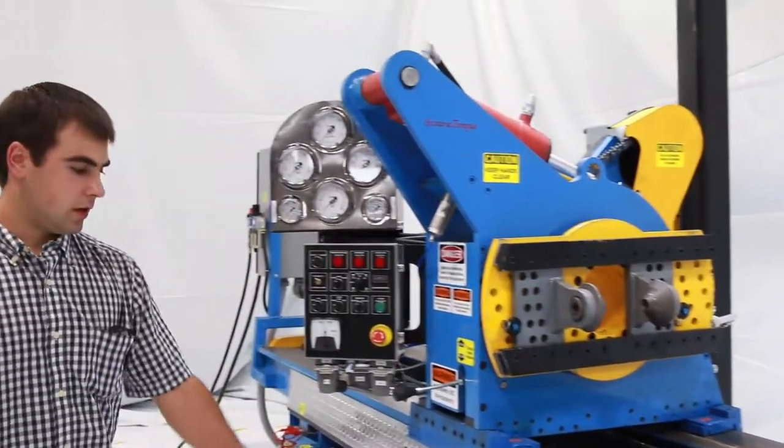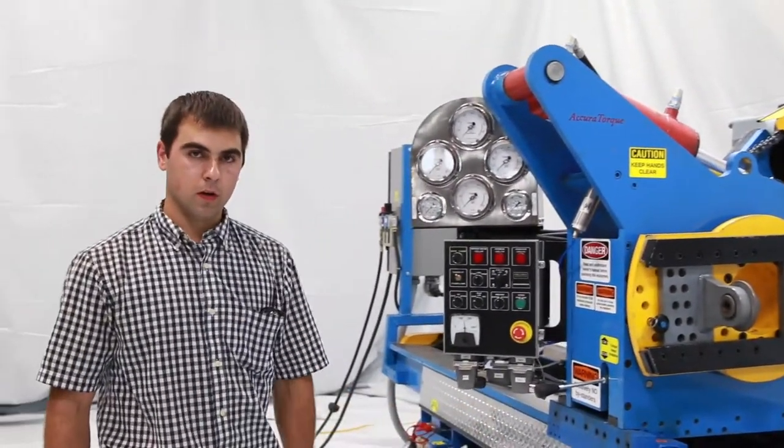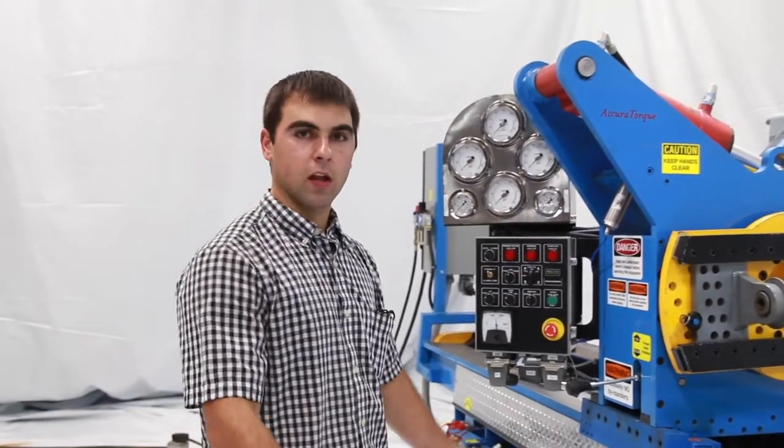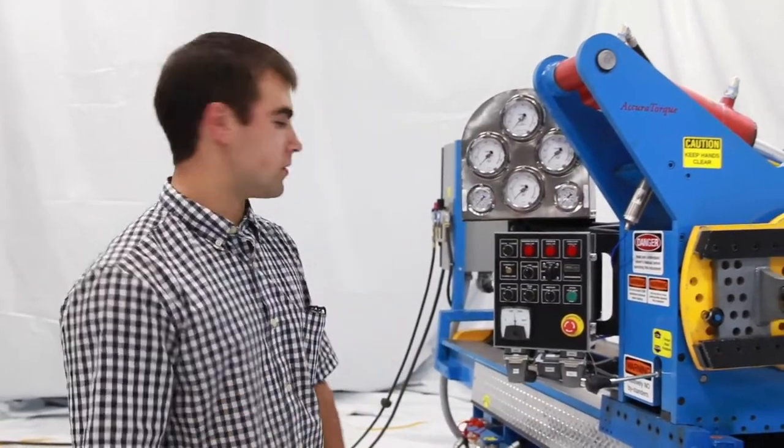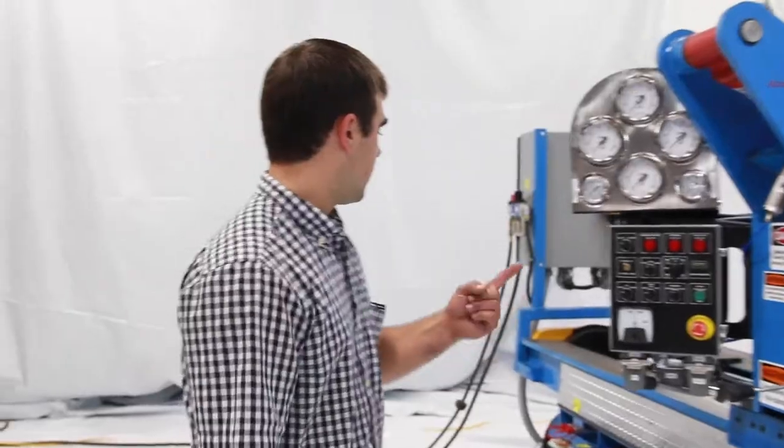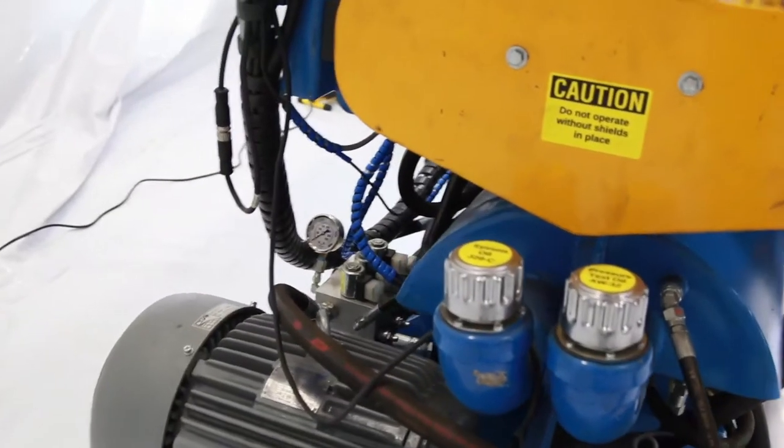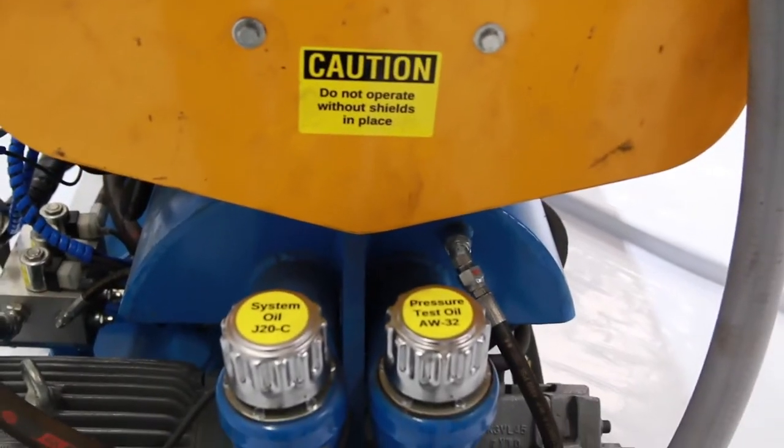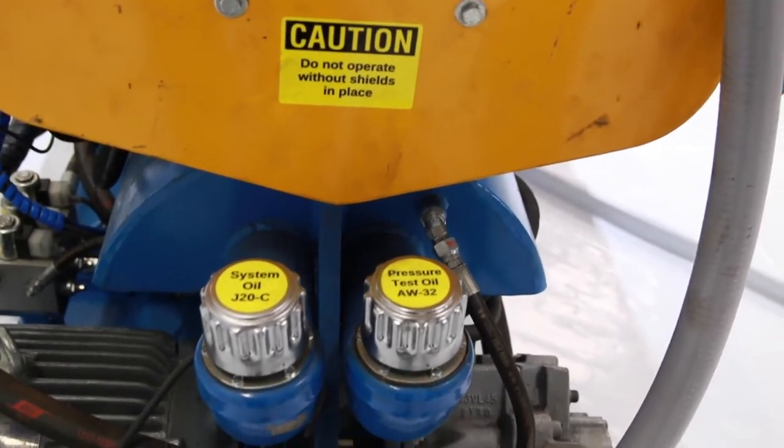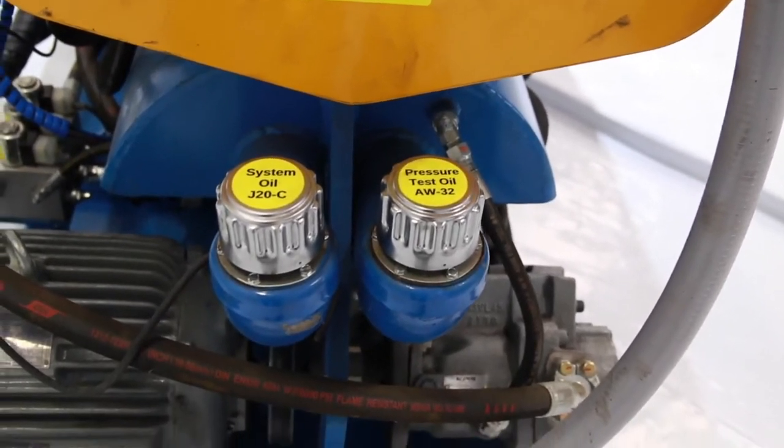Another feature that the 20-inch tube fulfills is the hydraulic reservoirs of the machine. There's three reservoirs in the Cylinder Cyclone. Number one being the oil that is used to operate the machine. The second reservoir contains the oil used for pressure testing.